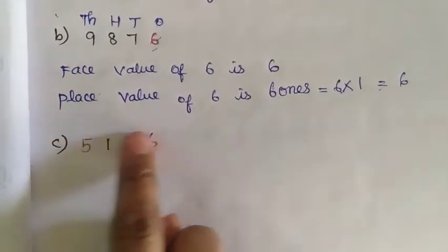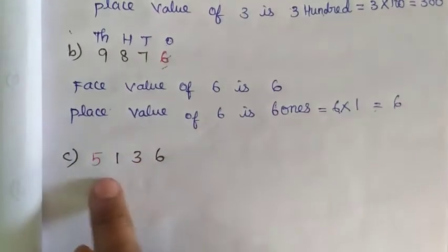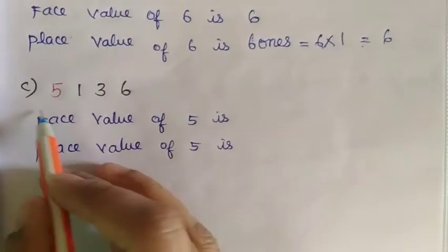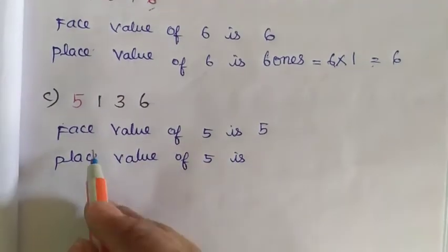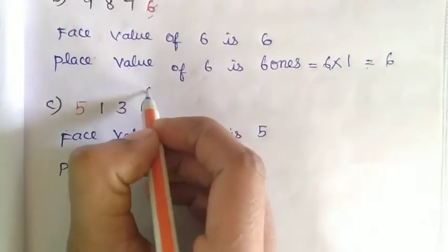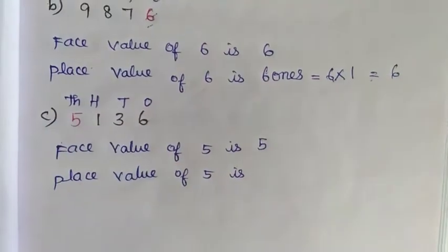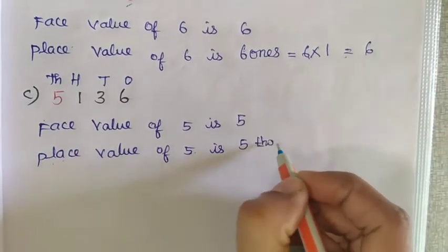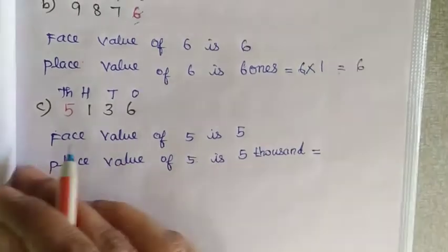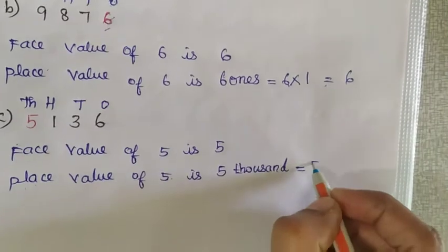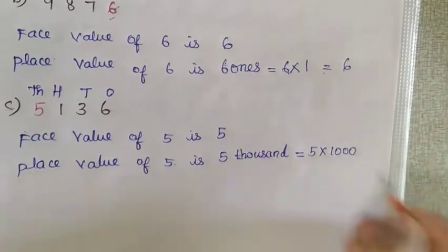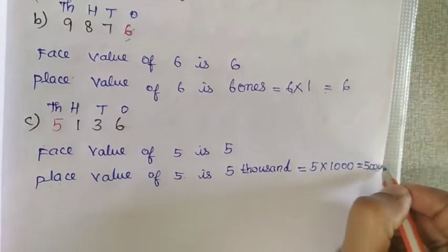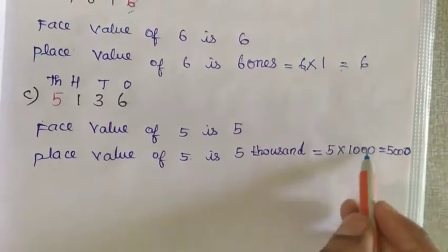Third question, C: the colored number is 5. Face value of 5 is 5. Place value of 5: put 1's, 10's, 100, 1000. 5 is sitting in 1000's place, so write 5 thousands equals 5 multiplied by 1000. 5 into 1000 equals 5000.